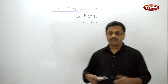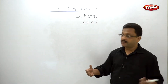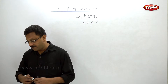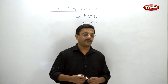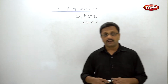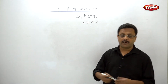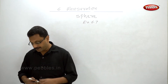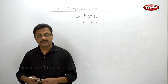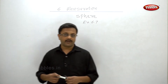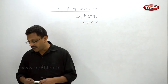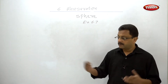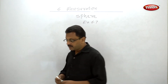Welcome back. Let us now solve exercise 6.7. The first problem: find the volume and surface area of a sphere of radius 4.2 cm. I'm not going to solve this because it is a direct substitution of formula — radius is given, substitute r = 4.2 and find the answer. This question appeared in the March 2015 exam for 3 marks. Very simple.